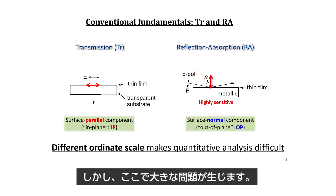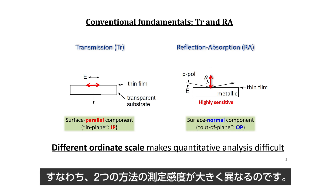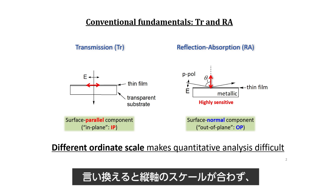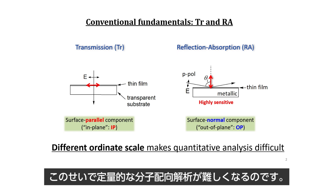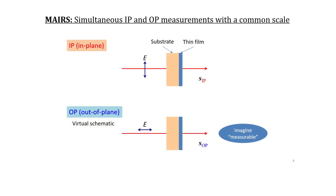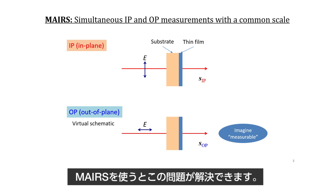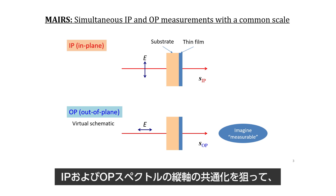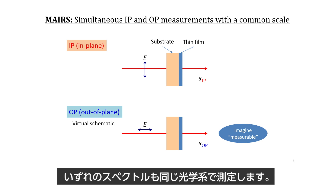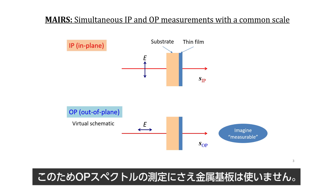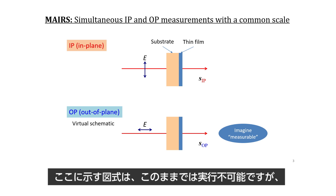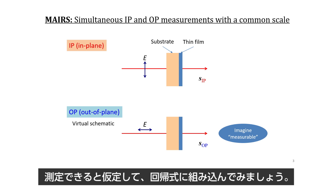Here we encounter a big problem: the sensitivities of the two methods are largely different from each other. In other words, the ordinate scale is different, which makes the quantitative analysis difficult. This matter is overcome by using MERS. To make the ordinate scales of the IP and OP spectra common, both spectra are measured by the same optical configurations, and no metallic surface is needed even for the OP measurement. This scheme can be involved in a regression equation if the measurement is imagined to be possible.